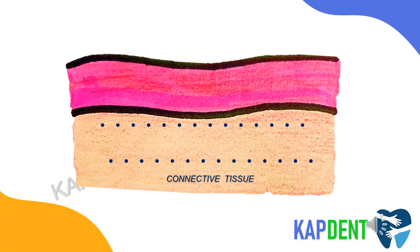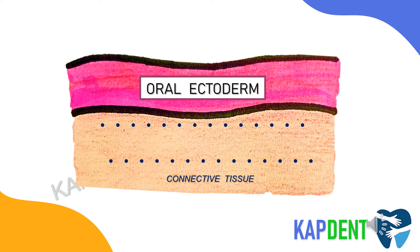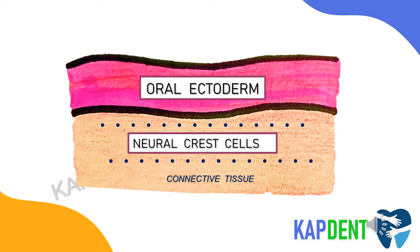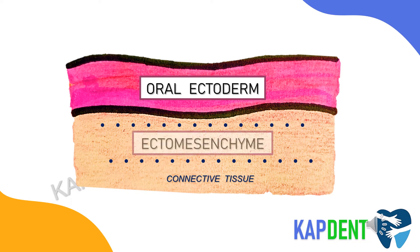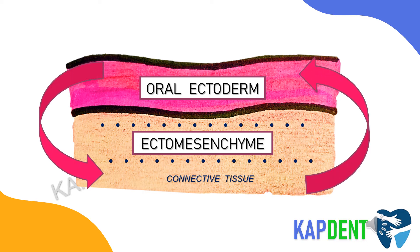Now let's have a closer look at the oral ectoderm. The connective tissue cells underlying this ectoderm are derived from the neural crest cells and are ectomesenchymal in origin. So basically, the development of tooth is an interaction between these two layers.